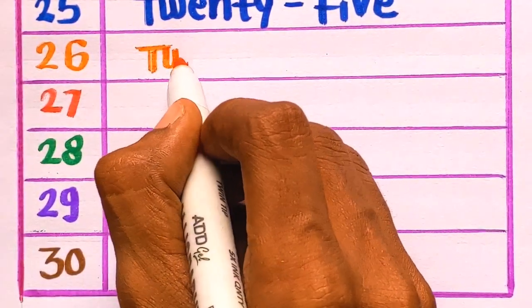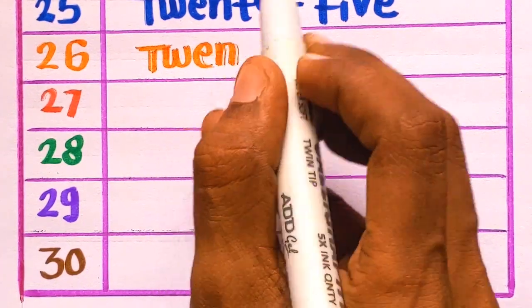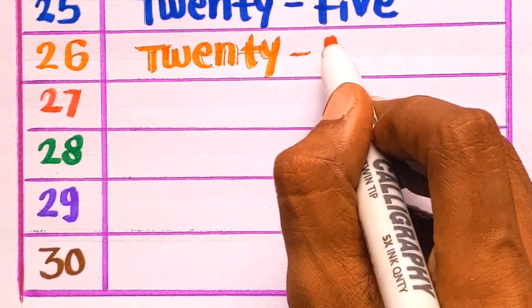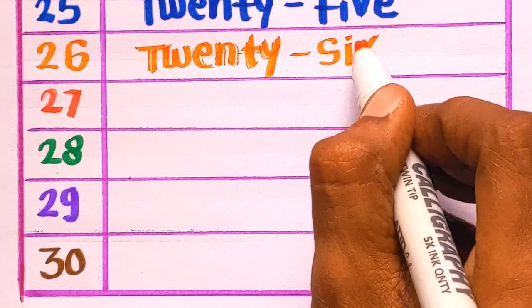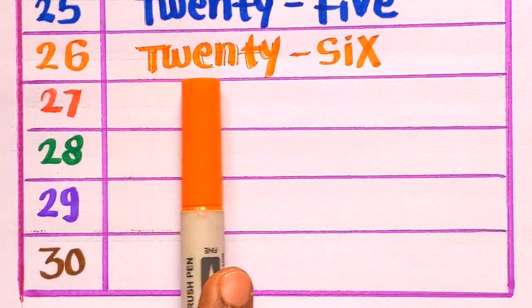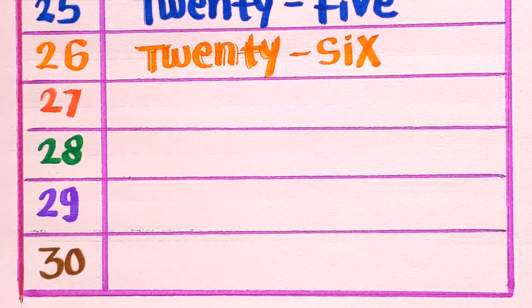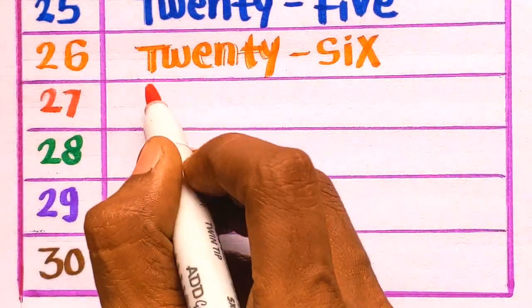T-W-E-N-T-Y-26. S-I-X-26, orange color. Next is 2-7-27.